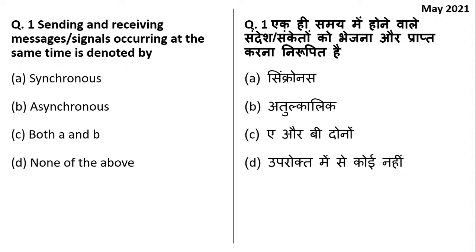Messages could be verbal or written. When we are talking about sending and receiving at the same time, these are called synchronous communication or synchronous media. You might have heard that when a group of people do a dance performance and the steps are not matching, we say they are not synchronized. So synchronized means things are occurring at the same time.